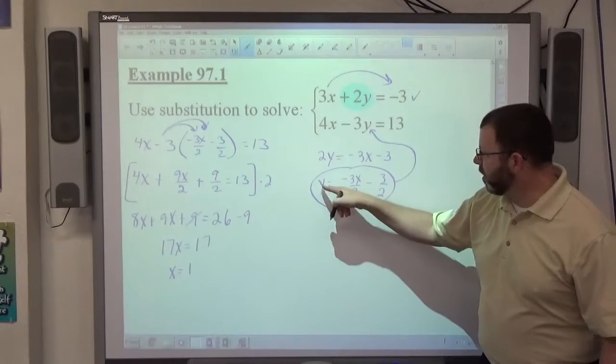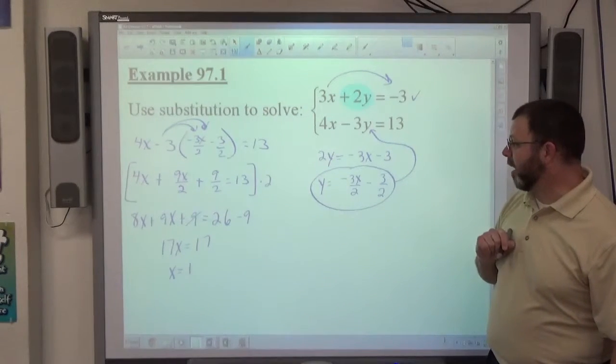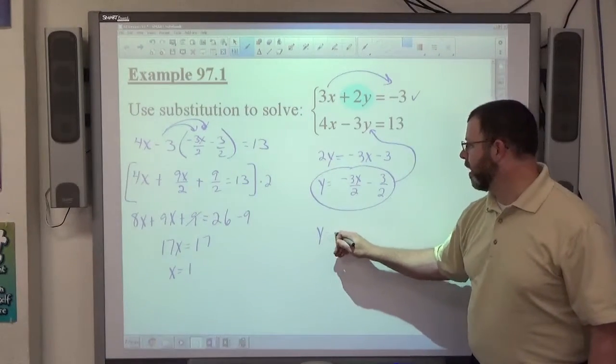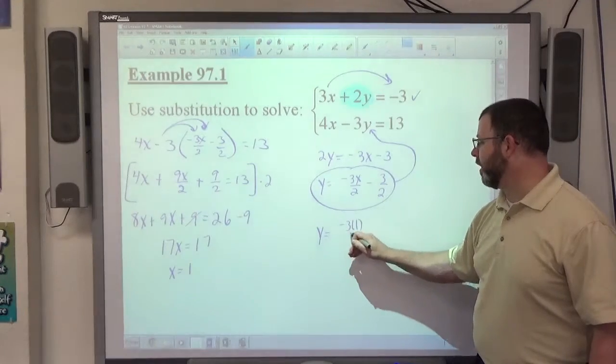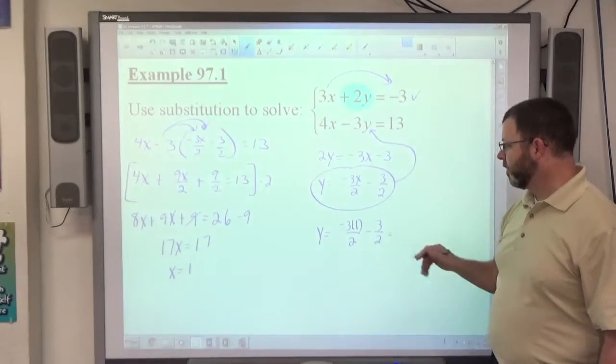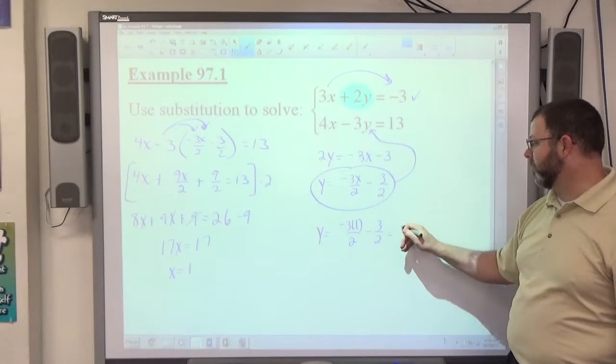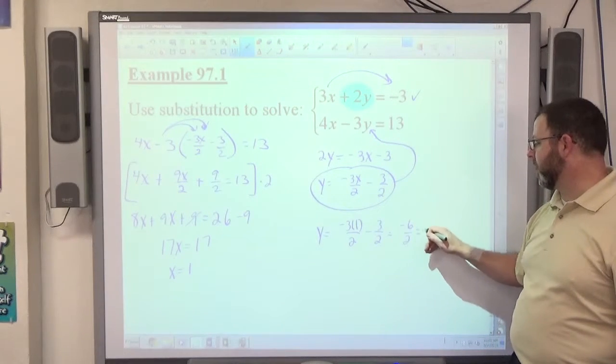Once I know that x equals 1, this says y equals negative 3 halves x minus 3 halves. So y equals negative 3 times 1 over 2 minus 3 halves. That's just negative 3 halves minus 3 halves, which is negative 6 halves, better known as negative 3.